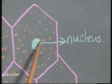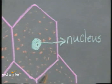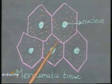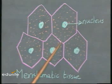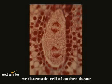They have abundant cytoplasm, and they have been packed with no intercellular space between them. They rapidly divide, increasing the length and the girth of a plant.